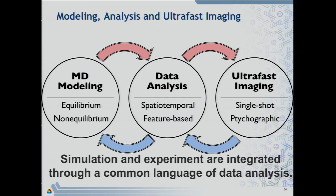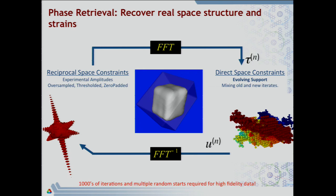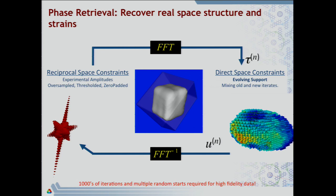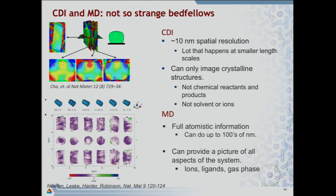The final program involves modeling analysis and ultra-fast imaging, connecting molecular dynamics with coherent X-ray diffraction through data analysis. In CDI, there is a phase retrieval problem — you have intensity data and iterate between reciprocal space and real space to get high-fidelity data. We're trying to guide this through molecular dynamics. CDI gives spatial resolution down to 10 nanometers but can only image crystalline structures — no chemical reactants, products, solvents, or ions. MD gives full atomistic information at hundreds of nanometers, and the two can intersect to provide a comprehensive picture.